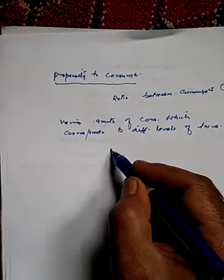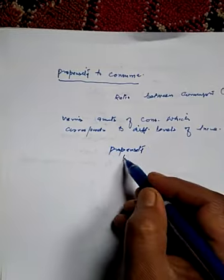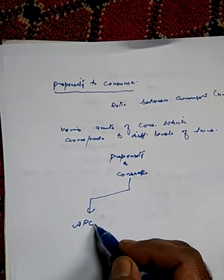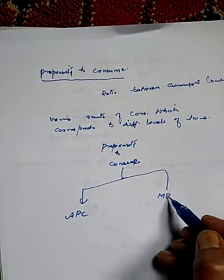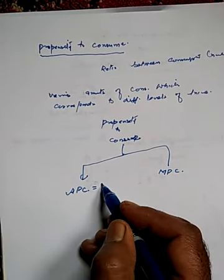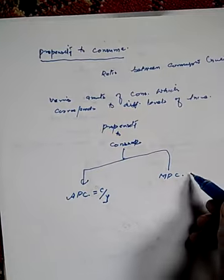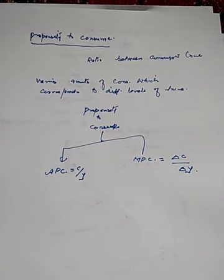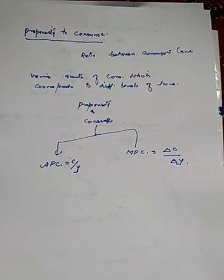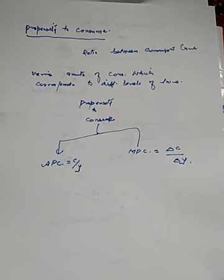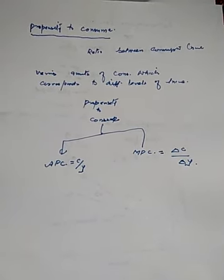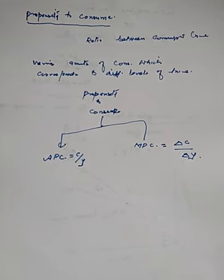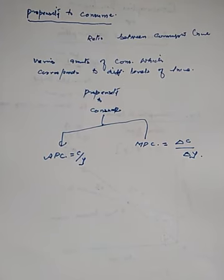The propensity to consume has two aspects: average propensity to consume (APC) and marginal propensity to consume (MPC). APC is written as C by Y — the ratio of consumption to income. MPC is the ratio of change in consumption to change in income. How these two aspects behave will be discussed in the next lecture. Keep in mind that consumption function shows the relationship between consumption and income, and propensity to consume is the ratio between consumption and income.